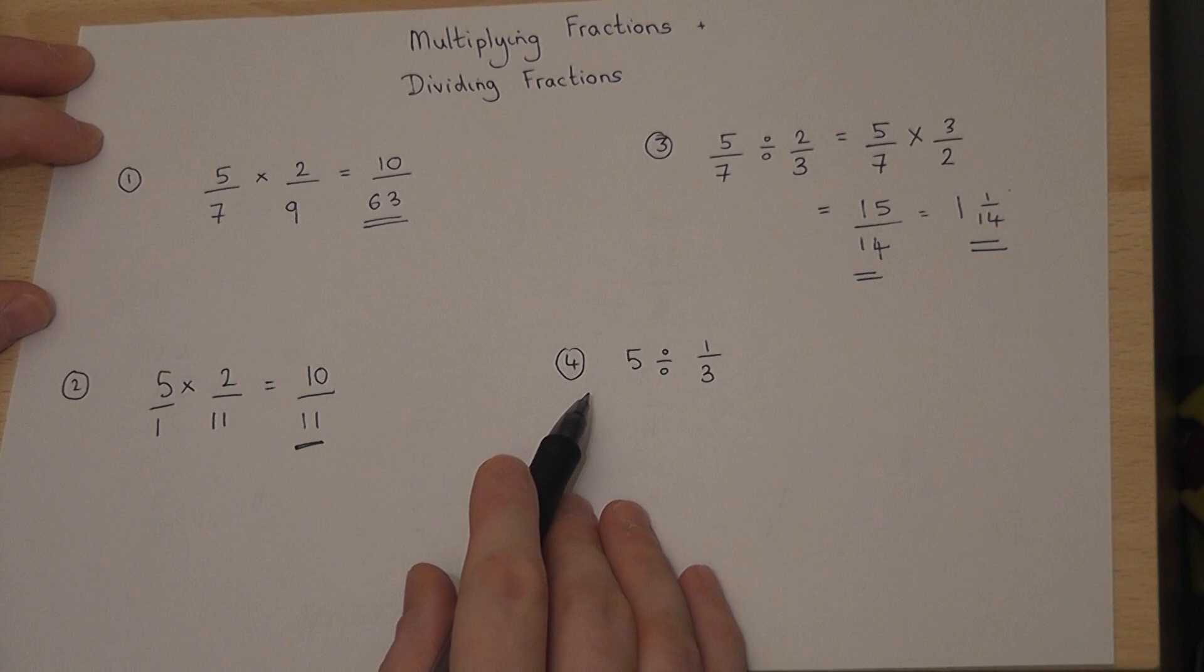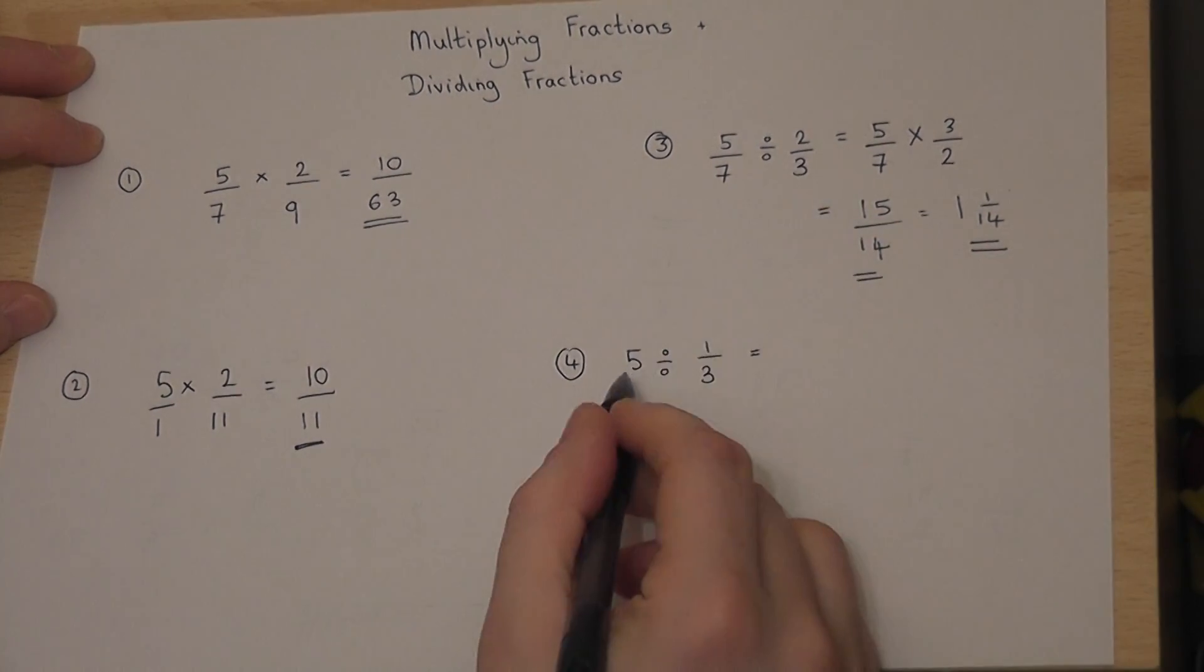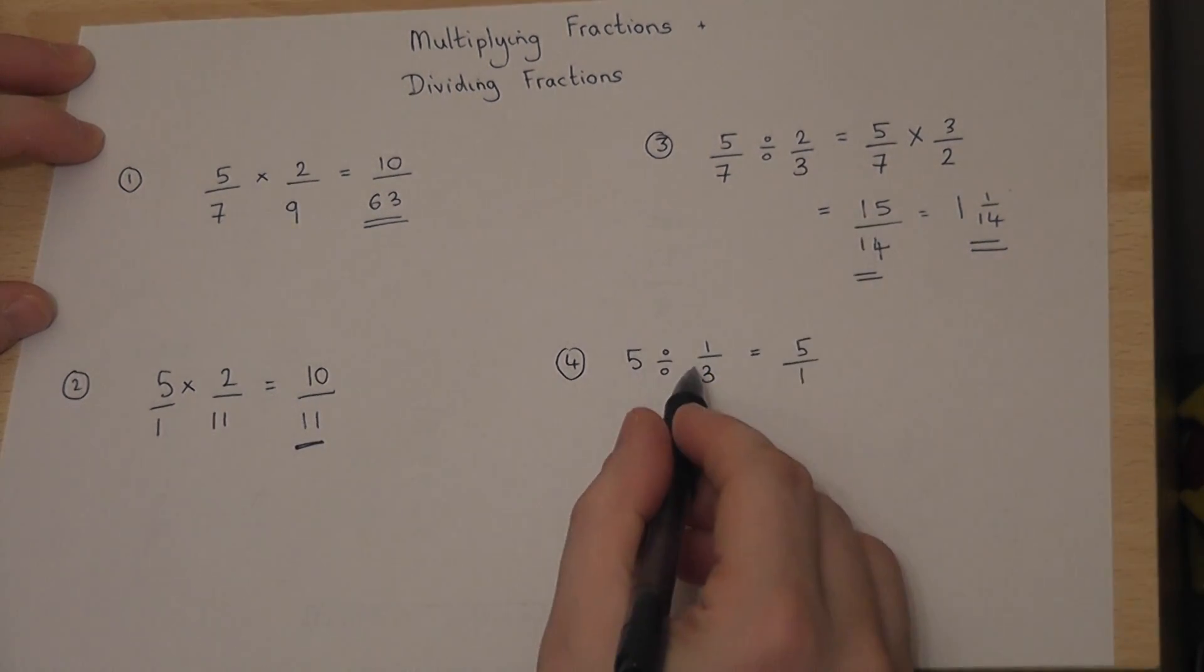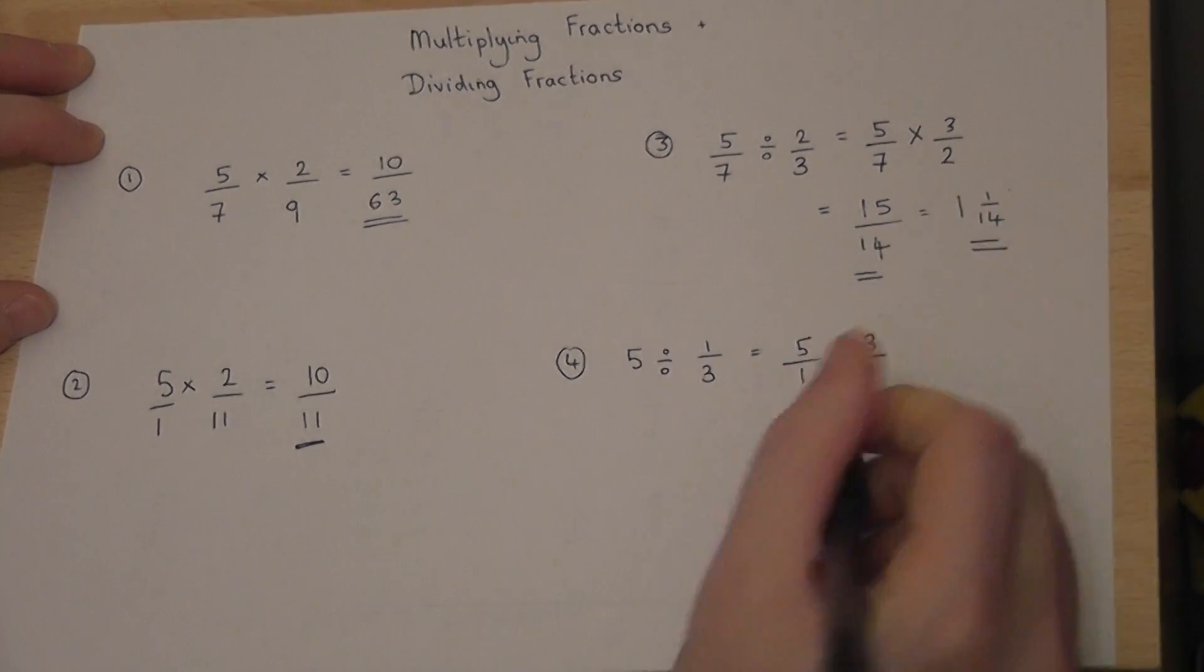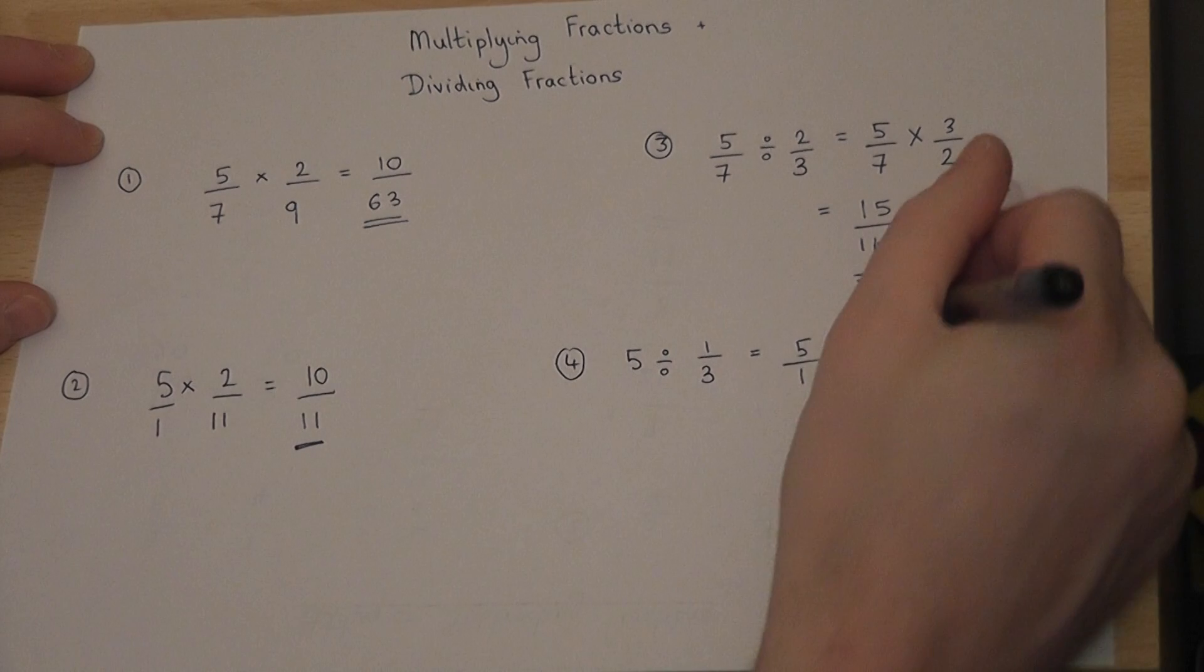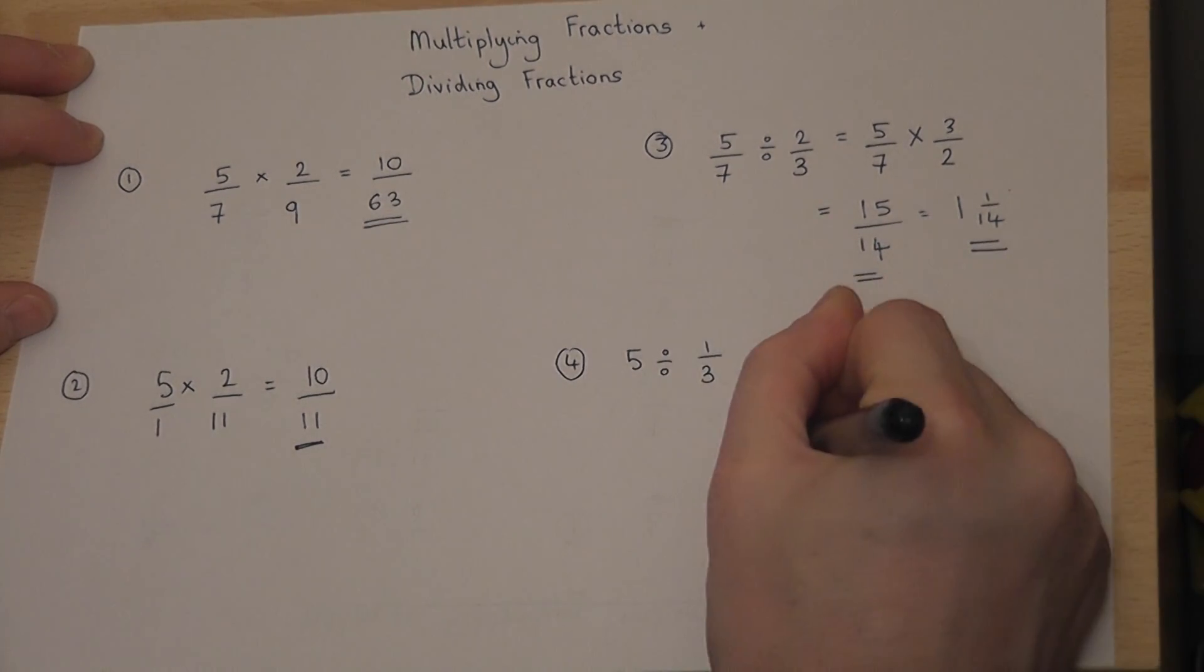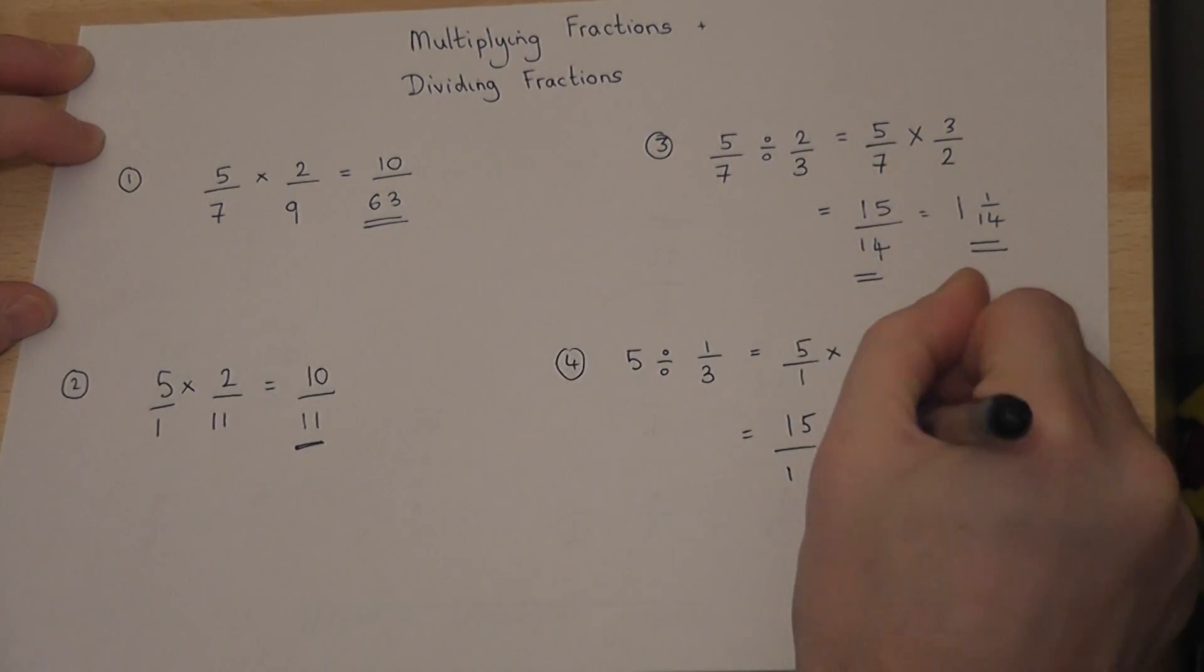The final example, we have one of these integers again, a whole number. So, we write 5 as 5 over 1. We then reciprocate or flip the second fraction and turn the divide into a times. And that's all there is to it. 5 times 3 is 15, 1 times 1 is 1. So, the answer is just 15.